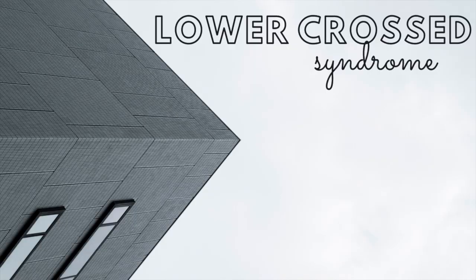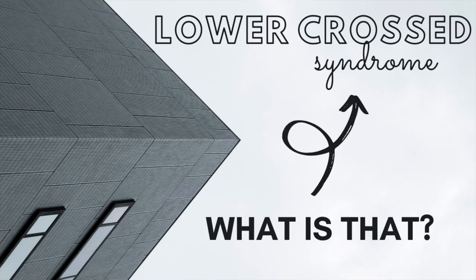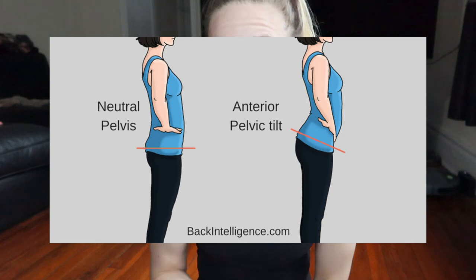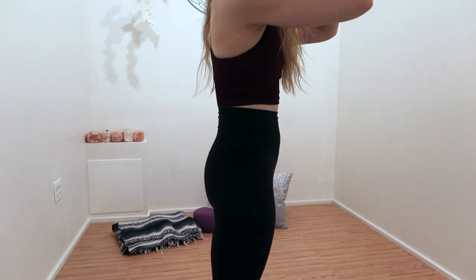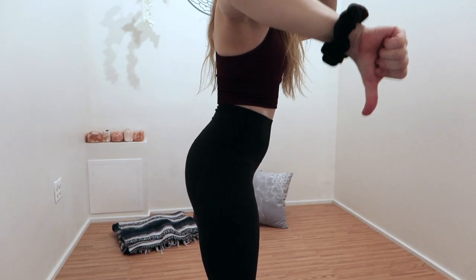The next one is lower cross syndrome. This is usually characterized by an anterior pelvic tilt, or APT. I always say it's like doing the Instagram booty — where you push your pelvis forward and your butt looks a lot bigger than it is. While you're in this position, you're really lengthening the glutes, the core stabilizers, and the muscles that run along your spine — the erector spinae. In turn, you're shortening your hip flexors, your inner thigh complex, and your lats.